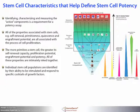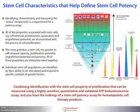The more primitive a stem cell, the greater its self-renewal capacity, proliferation potential, engraftment potential, and potency. All of these properties are intimately linked with each other. Individual stem cell populations are identified by their ability to be stimulated and respond to specific cocktails of growth factors. Combining identification with stem cell proliferation measured using a highly sensitive, quantitative, and validated ATP bioluminescence assay gives you the makings of a stem cell potency assay for hematopoietic cell therapy products.